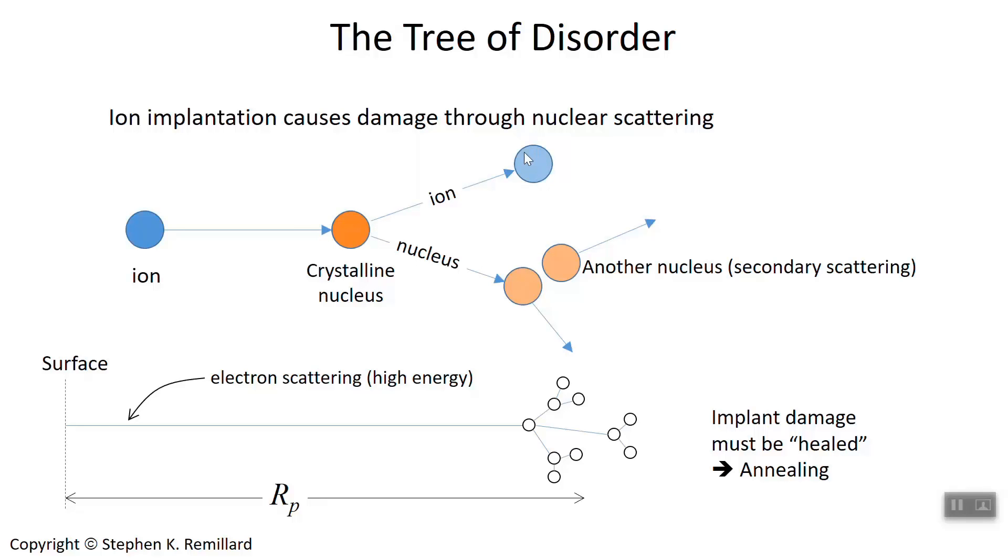At low enough energy, the probability of that becomes a lot higher. The nucleus goes off in this direction—it might strike another nucleus. That's secondary scattering, and that will be permanent damage. So you might end up with one ion implanted but several of these little damaged sites from nuclei that moved and scattered other nuclei. That has to be repaired.